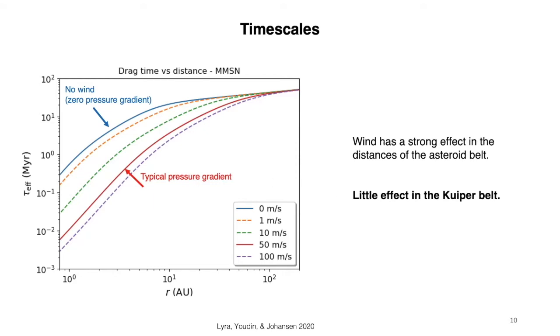What we're looking here is the effective drag time for different velocities of the wind. So, this line here, the blue line, is for zero velocity, meaning no wind. There is zero pressure gradient.